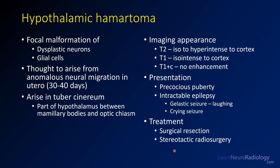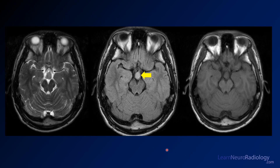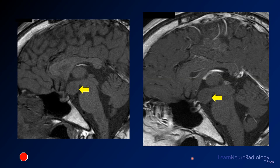Here are the images: on T2 in the basal cisterns, there's something occupying where there should normally be only CSF. It is not suppressed on FLAIR, and you see it's very similar to cortex in its appearance. On T1 pre-contrast, again very similar to cortex. On pre- and post-contrast images, there's very little difference as far as the mass is concerned — very little enhancement.